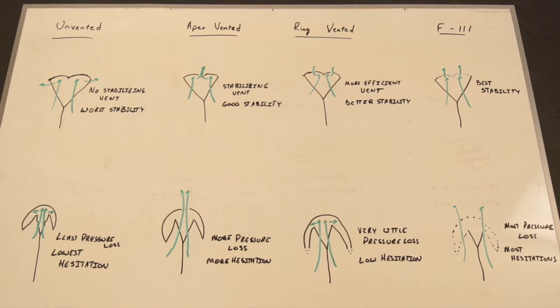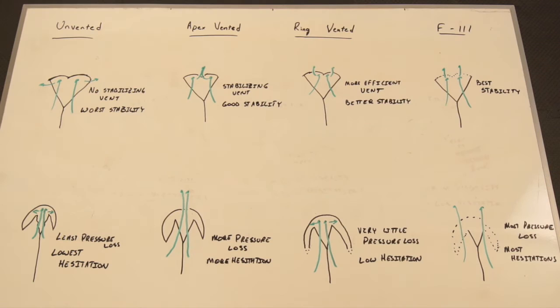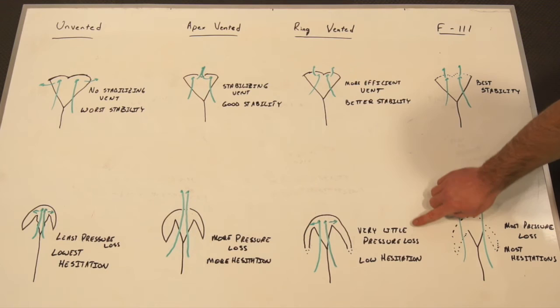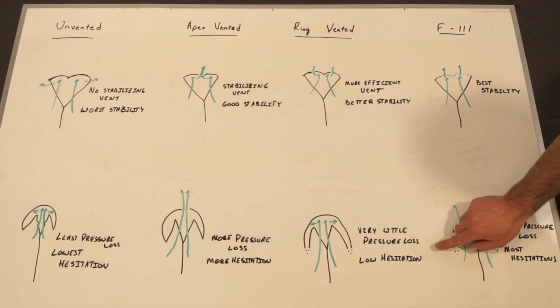Ring vented pilot chutes have a stabilizing vent placed in a ring around the top of the pilot chute, which creates a more efficient vent and actually gives us better stability than the apex vented pilot chute. In addition, they have the advantage that there is very little pressure loss because the vent hangs at the very bottom during initial expansion. That means the ring vented pilot chute has a much lower hesitation rate than the apex vented pilot chute.